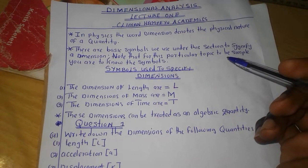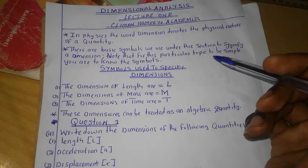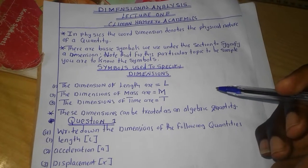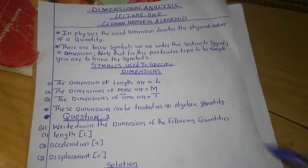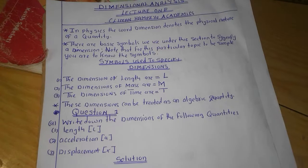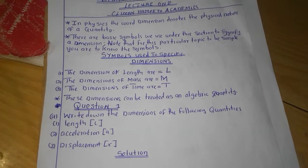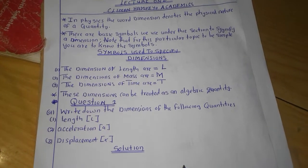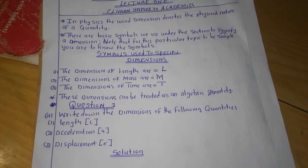Note that for this particular topic to be simple, you need to know the symbols that are used. The symbols used to specify dimensions: number one, we have the dimensions of length and we simply use a big letter L. We have the dimensions of mass, we use big letter M. We have the dimensions of time, we use big letter T.